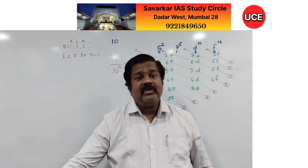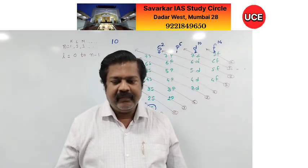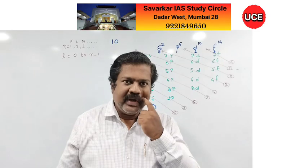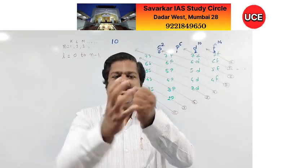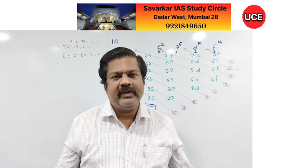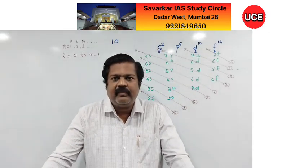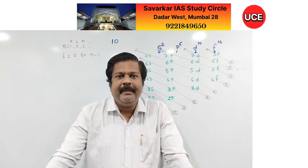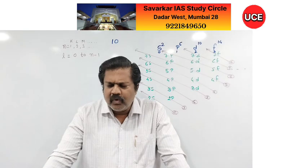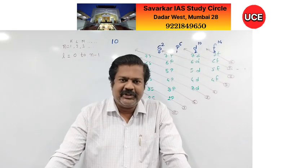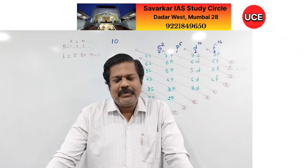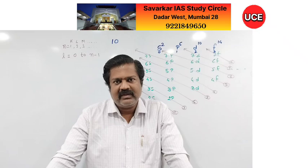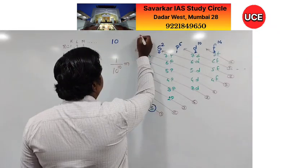The region where electron-finding probability is maximum is called an orbital. These orbitals have different shapes. The S orbital is spherical — electron density is distributed equally all around the nucleus. The P orbital has a dumbbell shape, which more closely resembles the infinity sign.